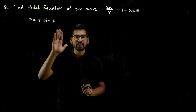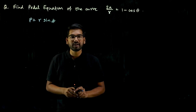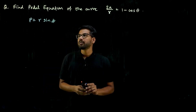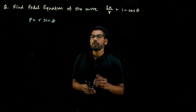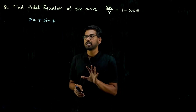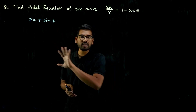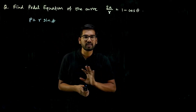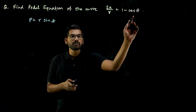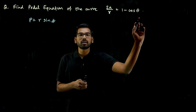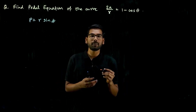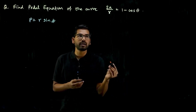We need to find φ, where φ is the angle between the radius vector and the tangent. For all polar curves, finding φ follows the same method. First, for the given polar curve equation, apply log on both sides.